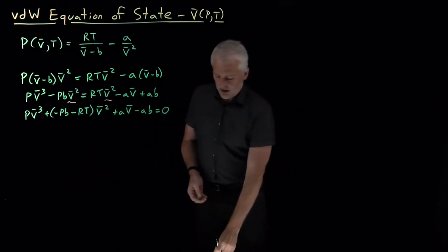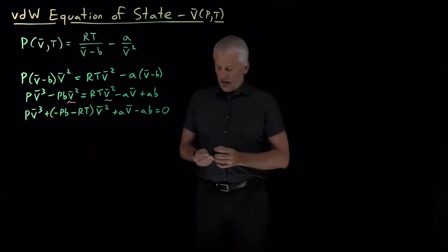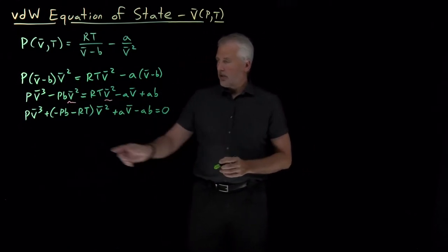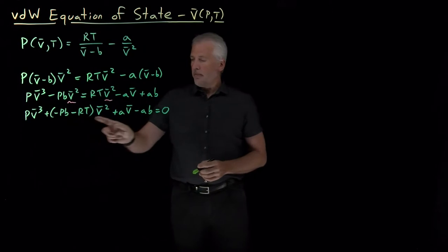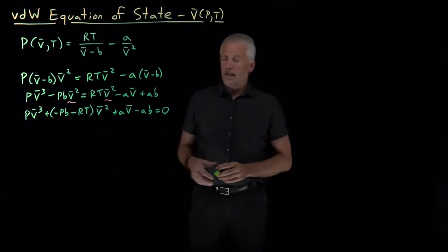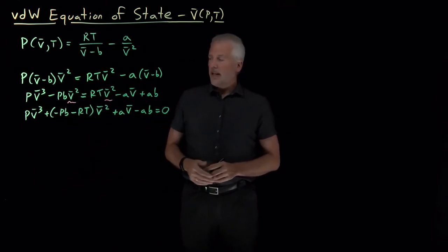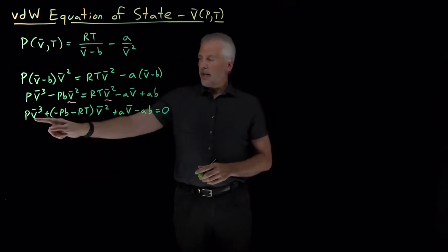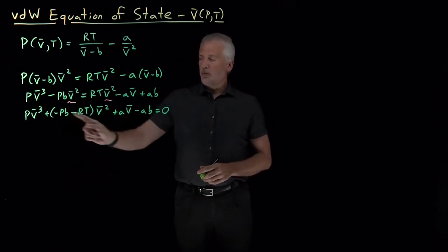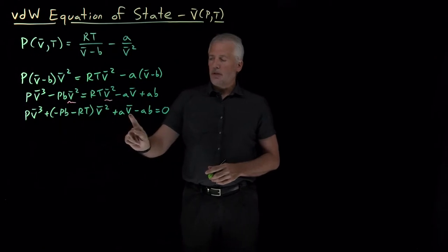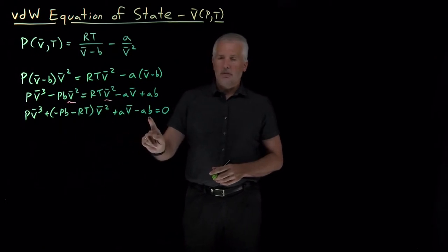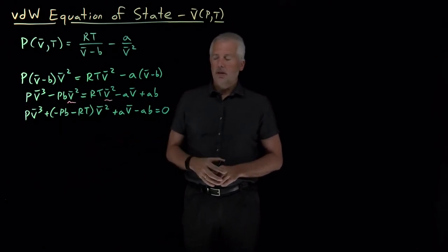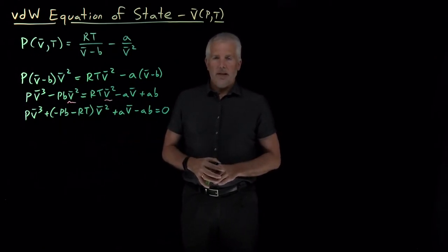The aV̄ term on the other side becomes positive ab times V̄, and the ab becomes a negative ab constant. So now I've gotten all the terms involving V̄ on the left-hand side, and I notice that what I have is a cubic equation: a V̄ cubed term, a V̄ squared term, a linear term, and a constant term.